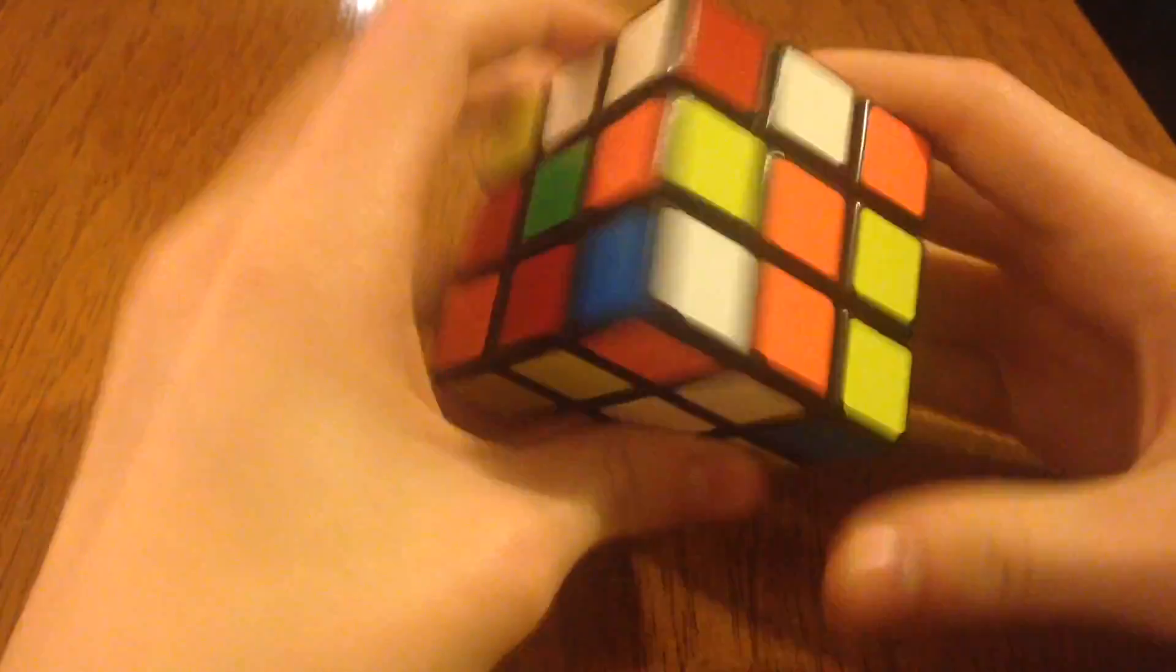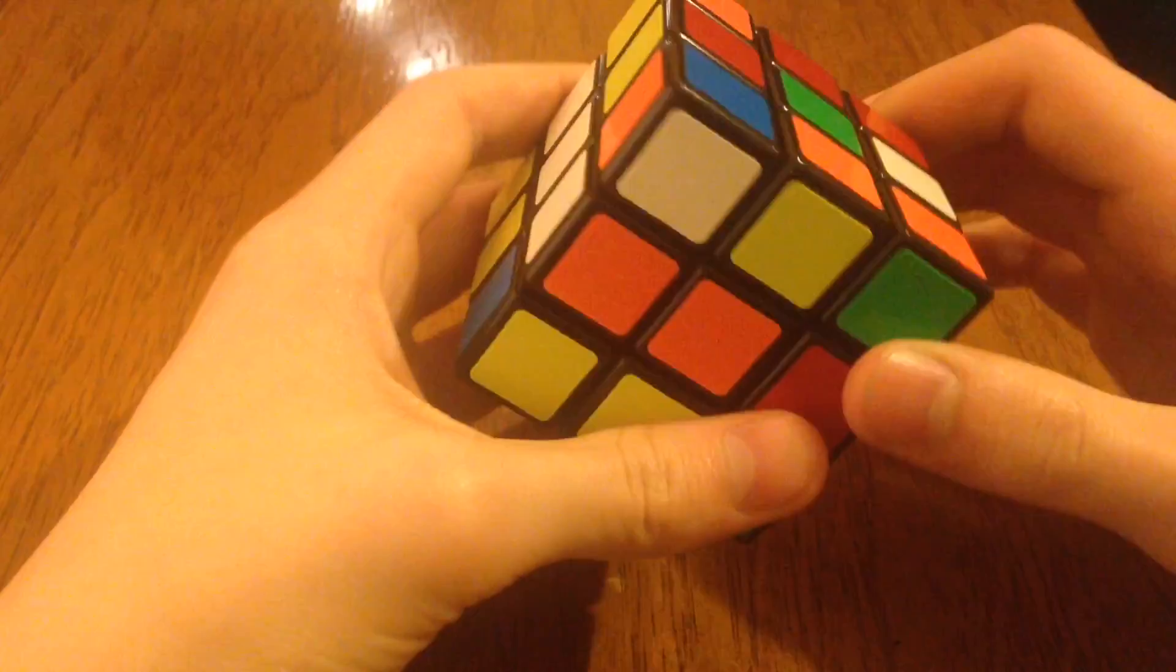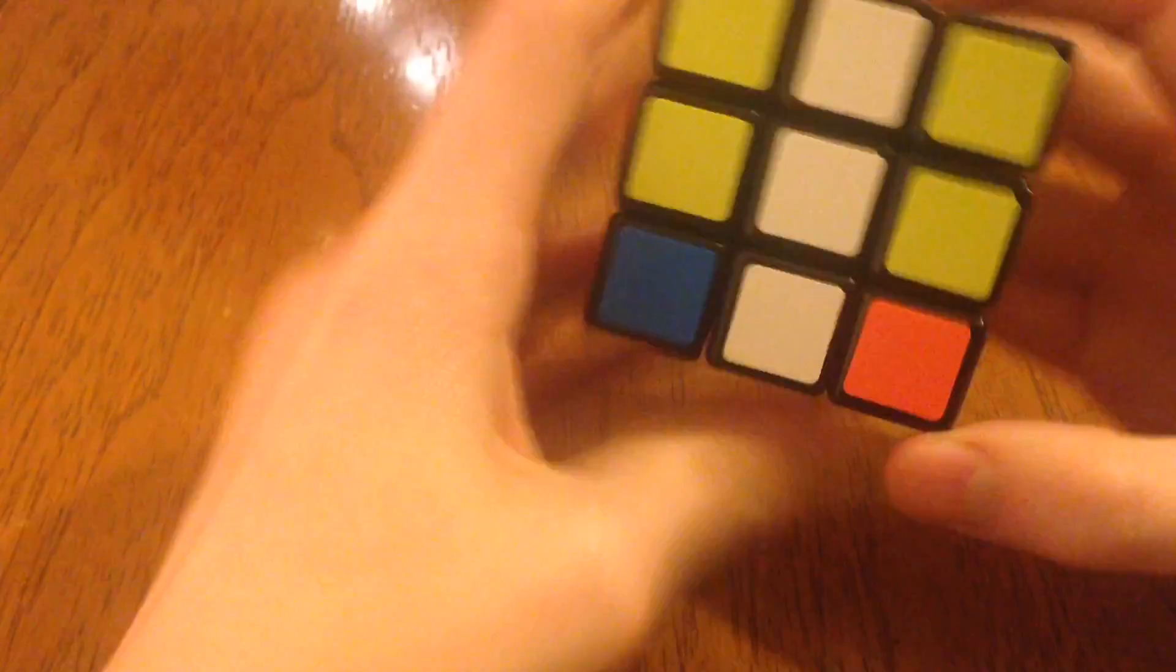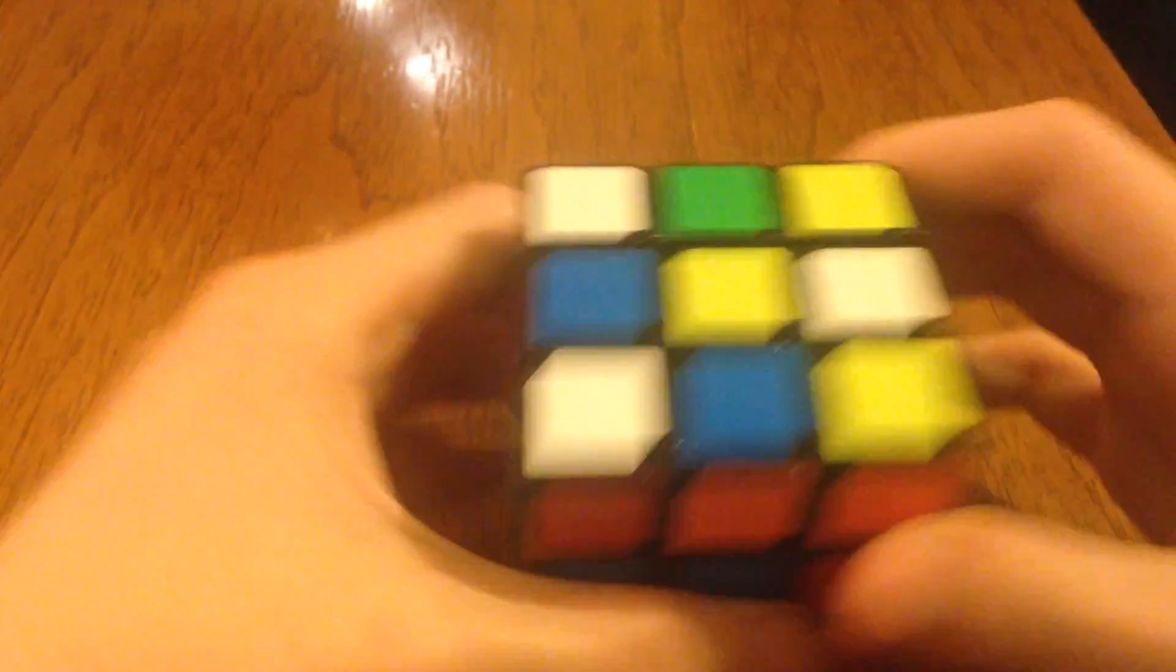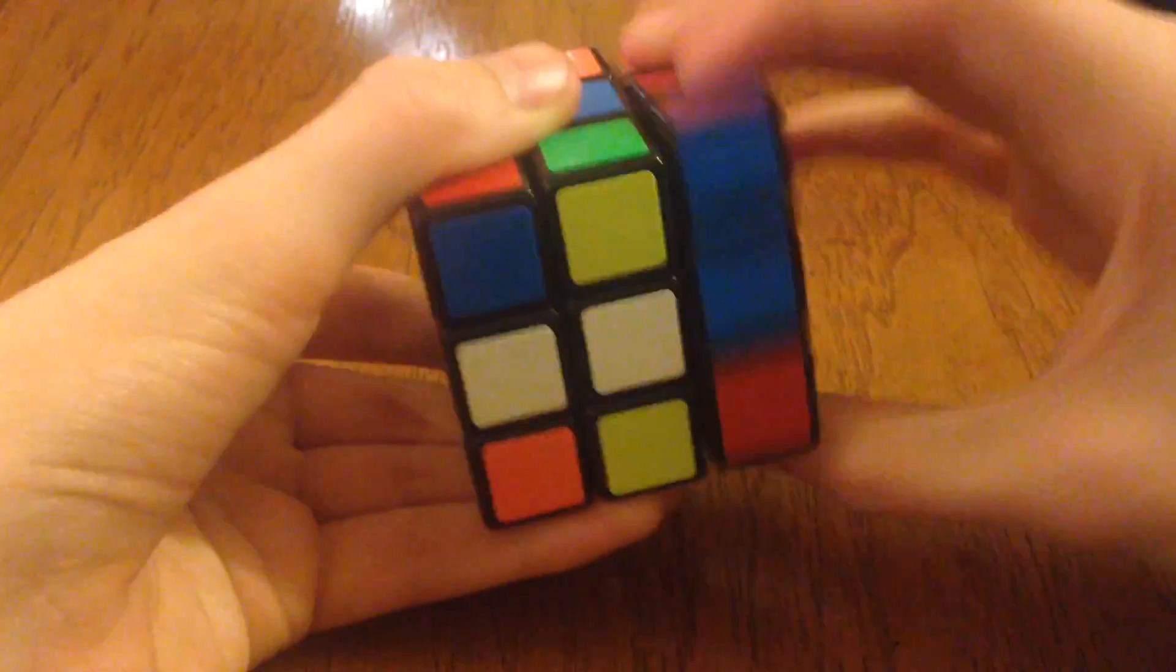So this is just going to take work for you, intuition and stuff, trying to figure out how this works. But simply, if you have a white on the top, like this, and you want it to be here, of course, you just spin it into place.